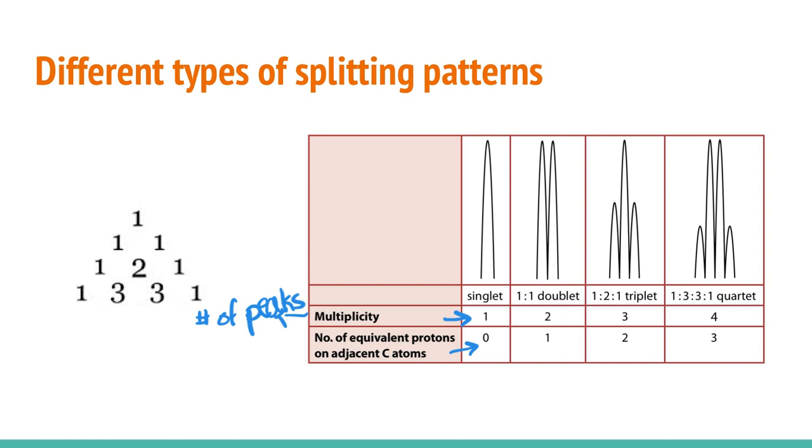If you have a doublet, then it has a multiplicity of two. And that means that it has one proton on its adjacent carbon. And if you have a triplet, multiplicity of three, and there are two equivalent protons on adjacent carbon atoms. And then for a quartet four, there are three adjacent protons on adjacent carbon atoms.